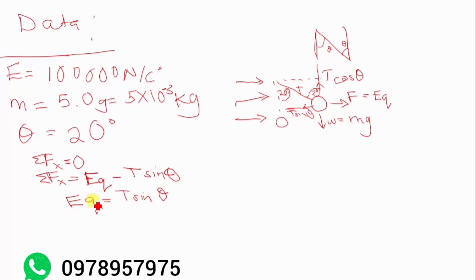Then we're going to have EQ being equal to T sine theta. Then what we want here is the charge, which is Q. So Q, when we make Q subject to the formula by dividing both sides by E, we're going to have it being equal to T sine theta over E.